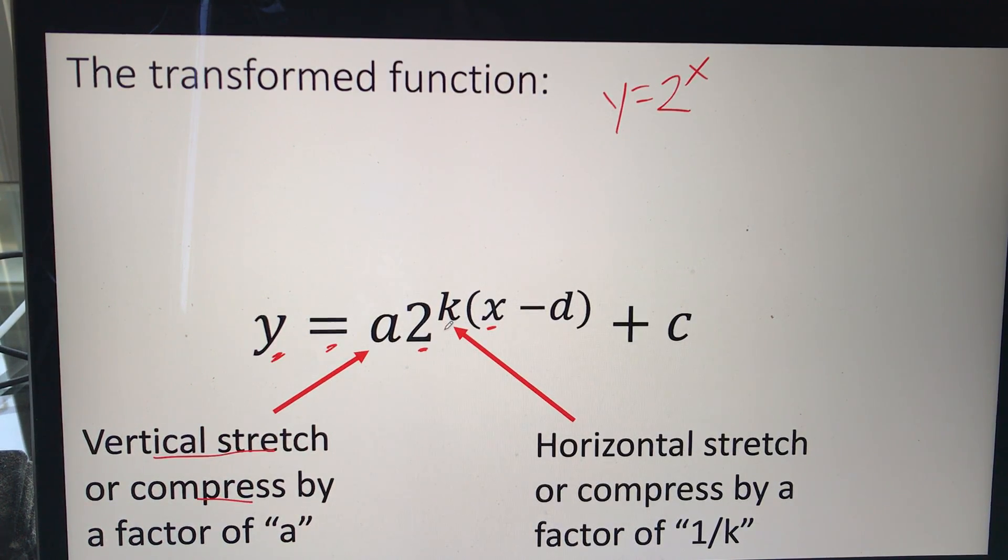Our k, which is here, is our horizontal stretch or compression. And we multiply the x values by 1 over k. So this one, we're multiplying the y values. And this one, we're multiplying the x values.